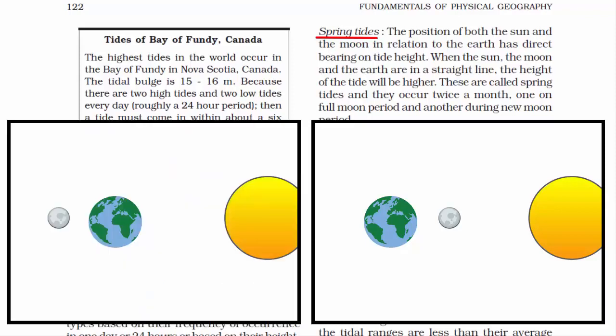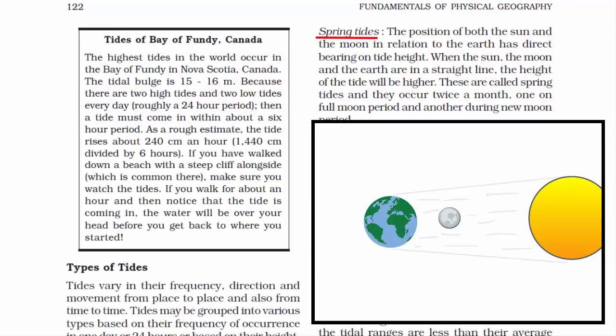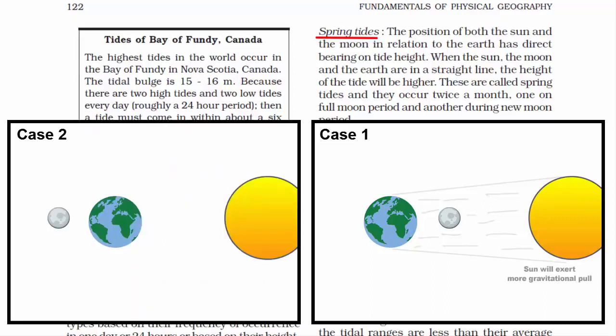Since the sun is bigger than all celestial bodies in our solar system, it exerts more gravitational pull. In case one, while in a straight line, the sun is behind the moon — it enhances the moon's gravitational pull on earth, creating much higher tides on that side of the earth. These are called spring tides. When the moon is right in front of the sun, the sun's rays make the moon disappear — this is the new moon period, which is Amavasya.